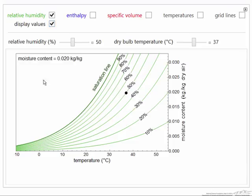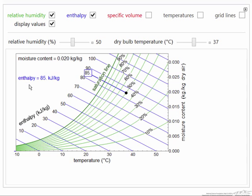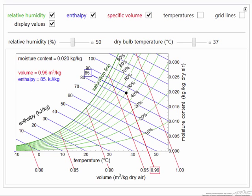And now I can display the values, in this case for the moisture content, which is the y-axis value. If I select enthalpy, then the enthalpy value is also displayed. And then specific volume displays the specific volume for this condition.